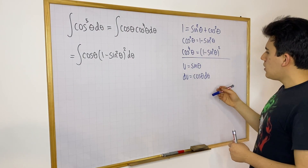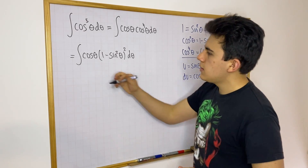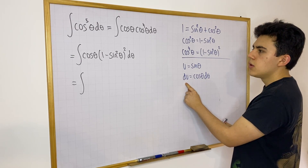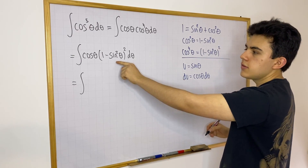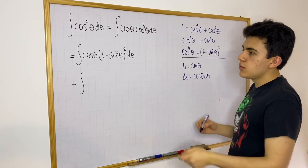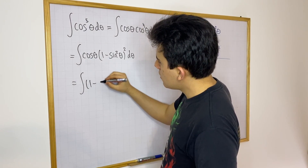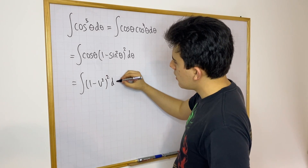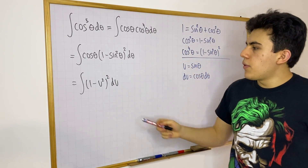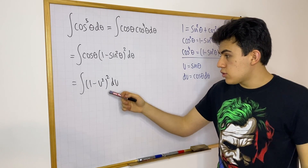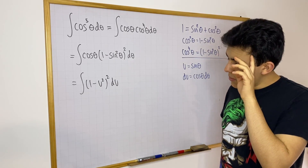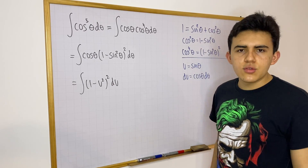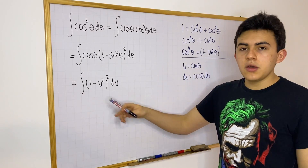We can rewrite this integral as: cosine theta times d theta becomes du, and 1 minus sine squared becomes 1 minus u squared. So the integral becomes the integral of (1 minus u squared) squared du.